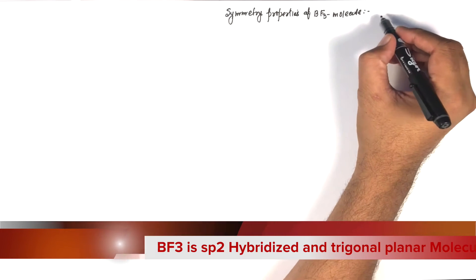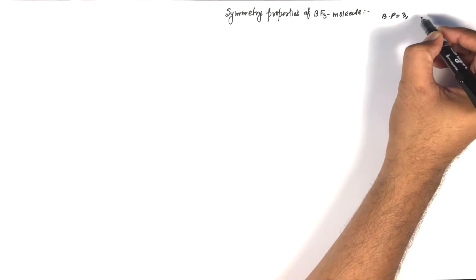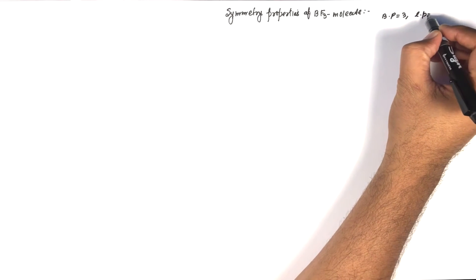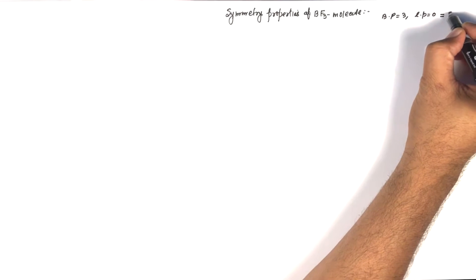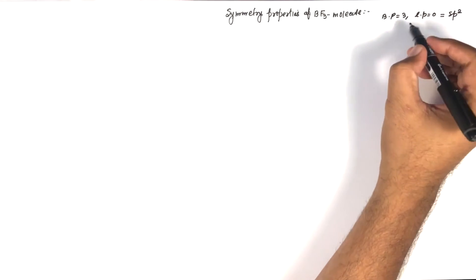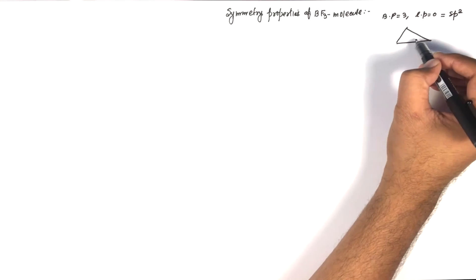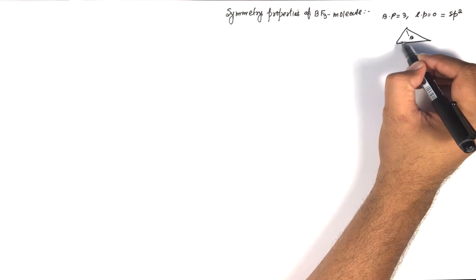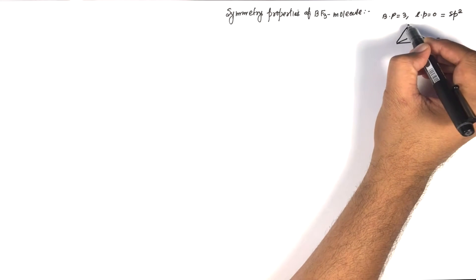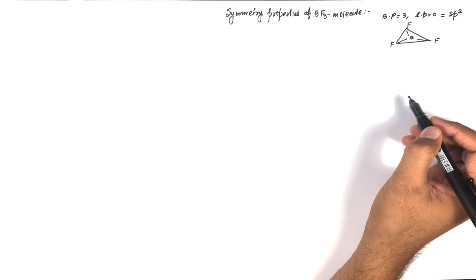This molecule has three bond pairs of electrons and zero lone pairs of electrons. Because of this, the hybridization of this molecule is sp2 and the structure becomes a trigonal planar molecule. This molecule is planar, meaning it is lying in the plane of the paper.